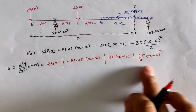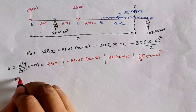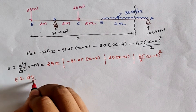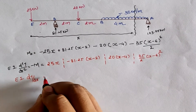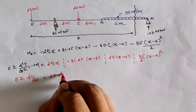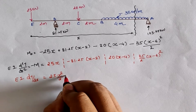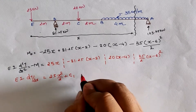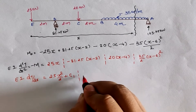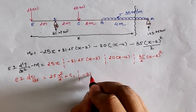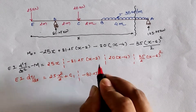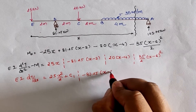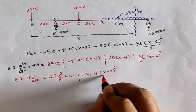Integrating this equation, we get EI·dy/dx = 25x²/2 + C₁ (integration constant), minus 81.25·(x − 2)²/2.